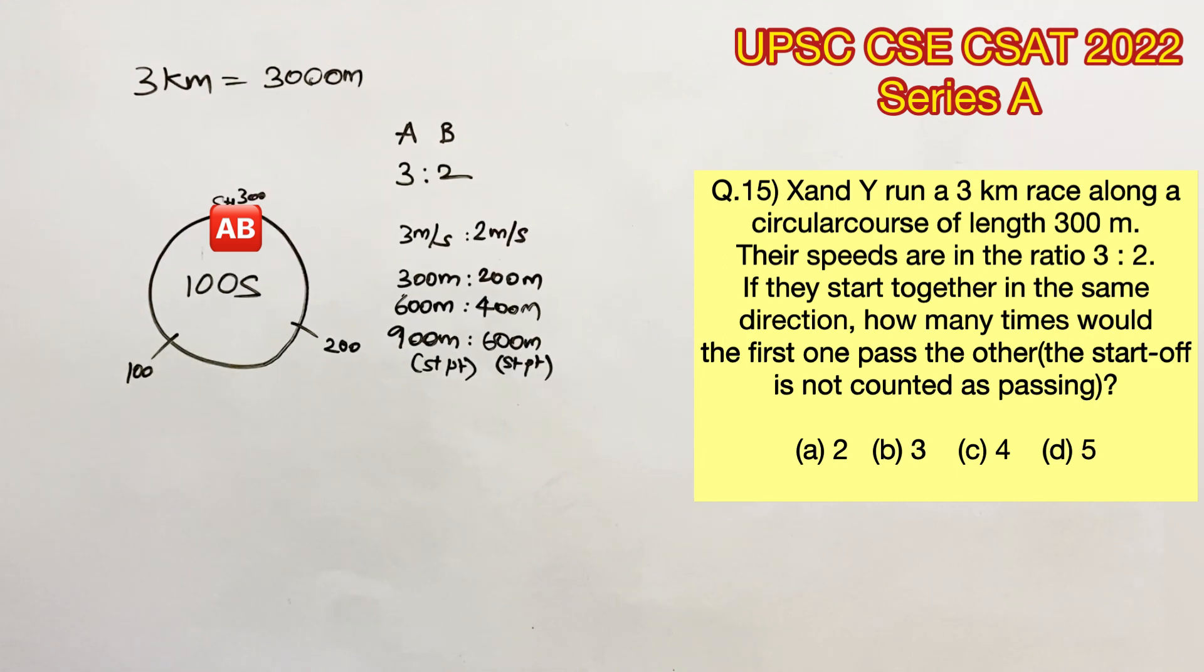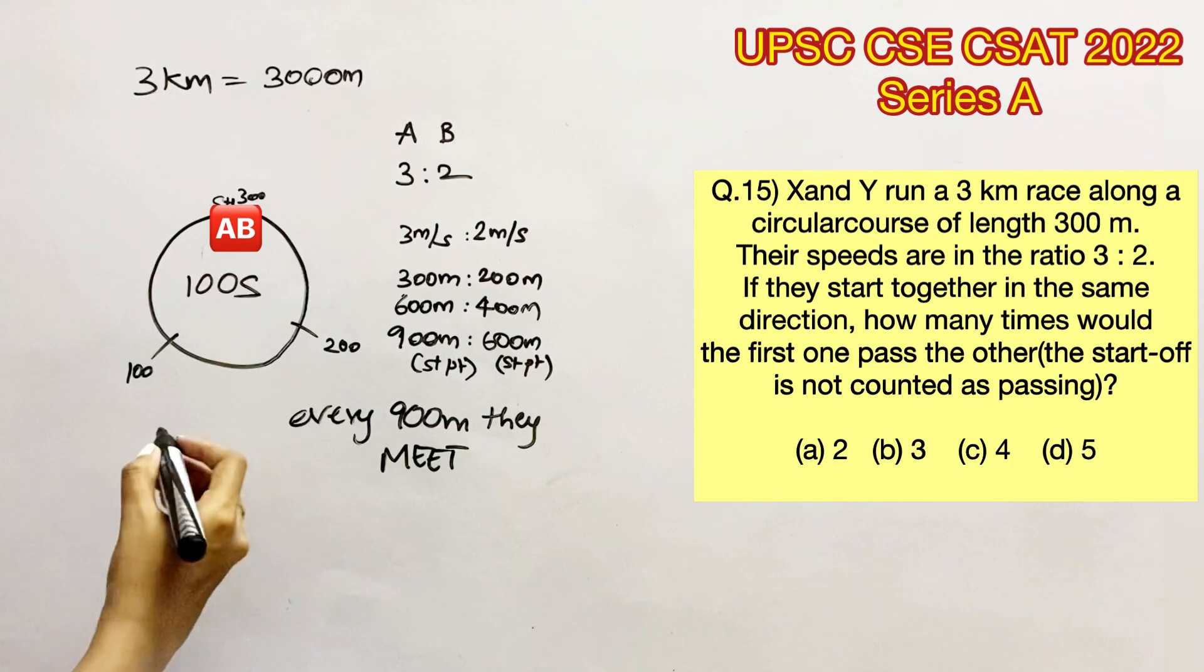So now we can conclude that every 900 meters, A and B meet. And this pattern is going to follow again. So we can conclude that the first 900 meters they meet, and the next 1,800 meters they meet.